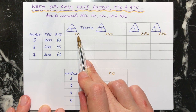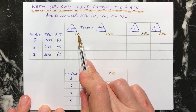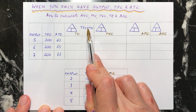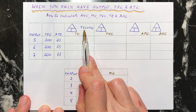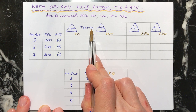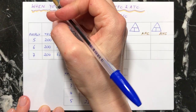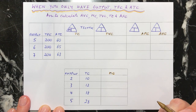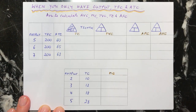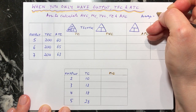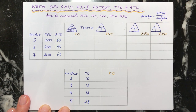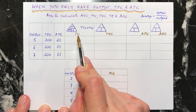So to begin with, let's see how we find out the total costs. We know that total costs equals your total fixed costs plus your total variable costs. In this situation we know our total fixed costs, but we don't have our total variable costs. However, we also know that average total cost equals total cost divided by output. So if you ever have an average, it's equal to your total divided by your output.